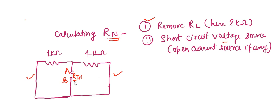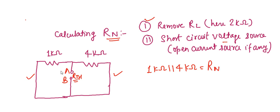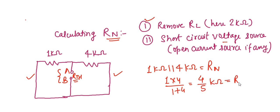If there were any current source, it should be open circuited. Then we find the RN value. Always remember the point from where we removed the RL — here it was removed from points A and B. So the 1 kilohm resistance is in parallel with the 4 kilohm resistance for the calculation of RN across terminals A and B. The equivalent resistance is 1 cross 4 upon 1 plus 4, giving 4/5 kilohm — that is your RN value.